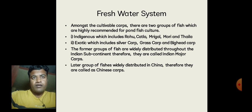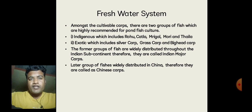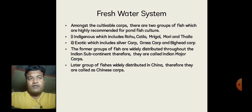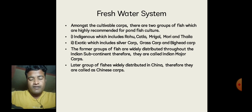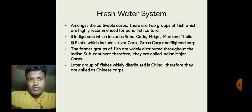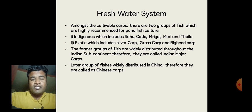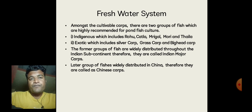The former group of fishes are widely distributed throughout the Indian subcontinent, therefore they are called Indian major carps. These carps are found in water bodies across different states within Indian territories, so they are called Indian major carps. The latter group of fishes are widely distributed in China, therefore they are called Chinese carps.